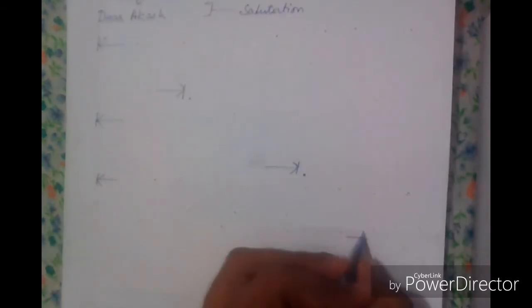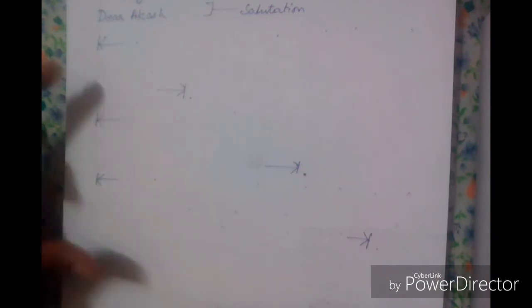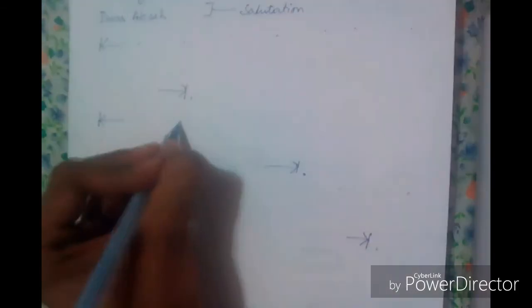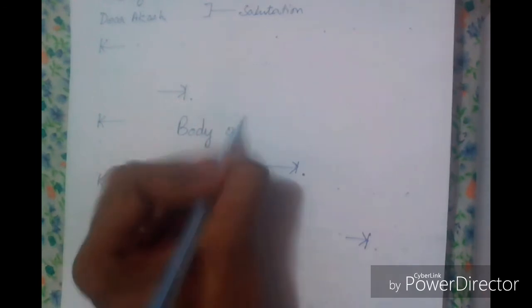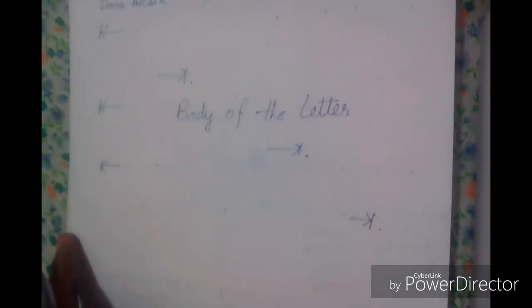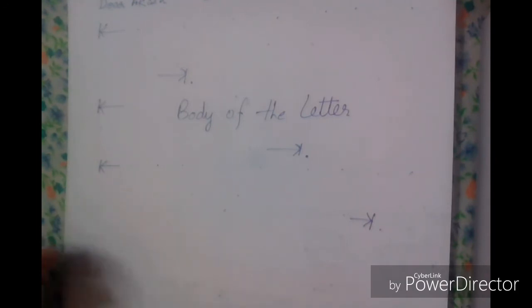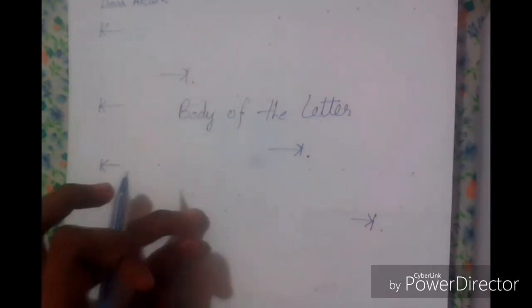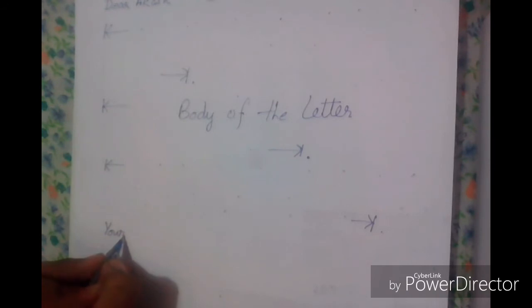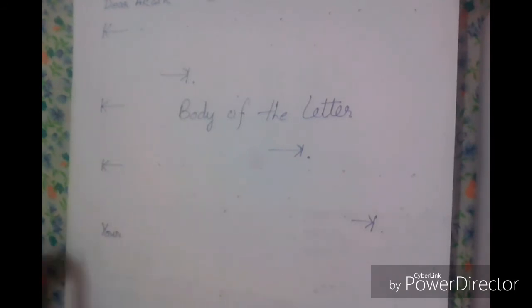Then you write the subscription. Before that, leave a line space. Since I'm writing an informal letter to a friend, I'll write 'yours' — Y-O-U-R. Note that in an informal letter you do not write 'yours' with an S; you write 'your' — Y-O-U-R, no S. Then 'sincerely' — S-I-N-C-E-R-E-L-Y.